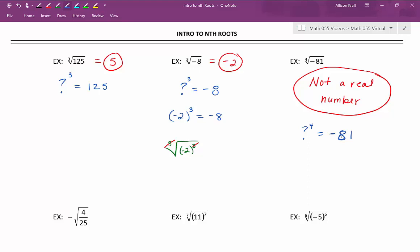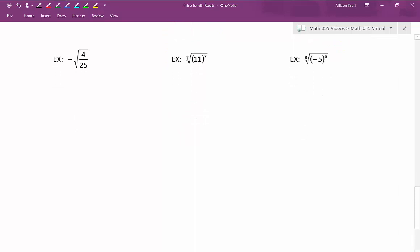That's why this is not a real number. Next example: negative square root of 4/25ths. Notice the placement of the negative. The negative is outside of the radical. So that negative is just coming straight down, and we'll have a negative on the outside of our answer. Now we want to look at the square root of 4/25ths.